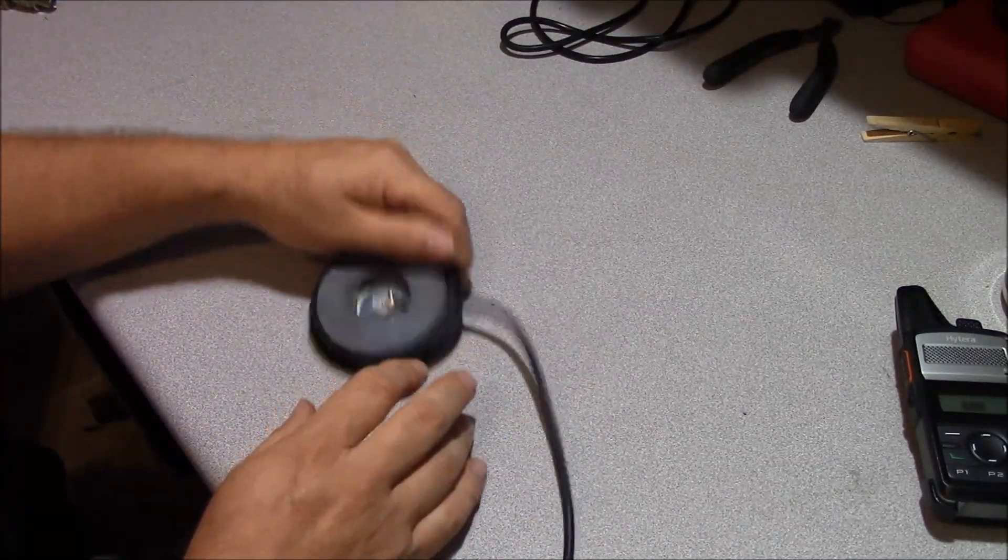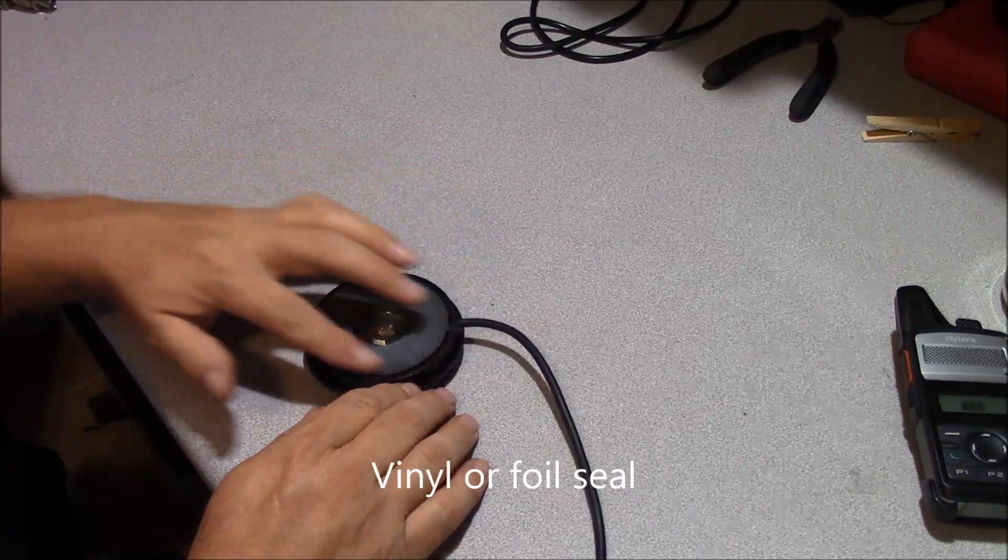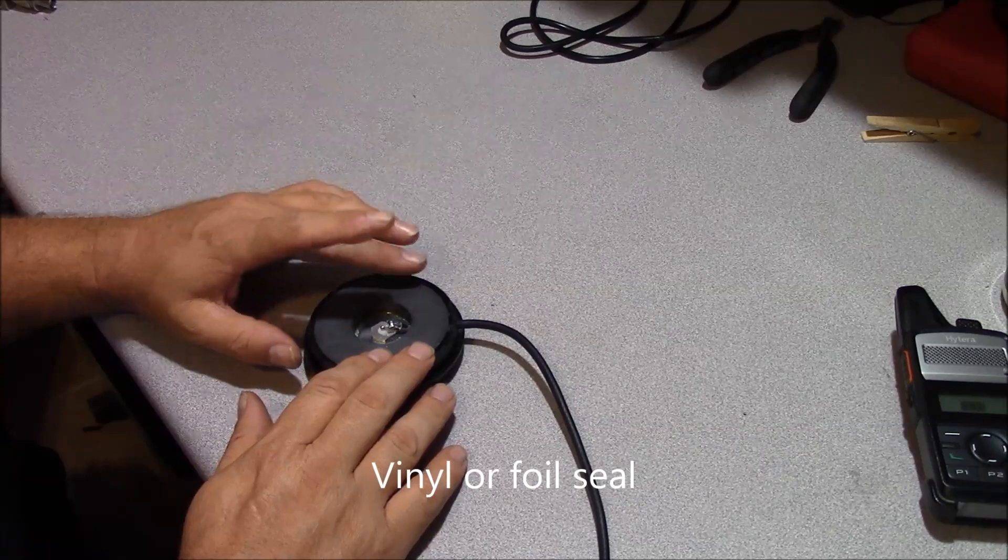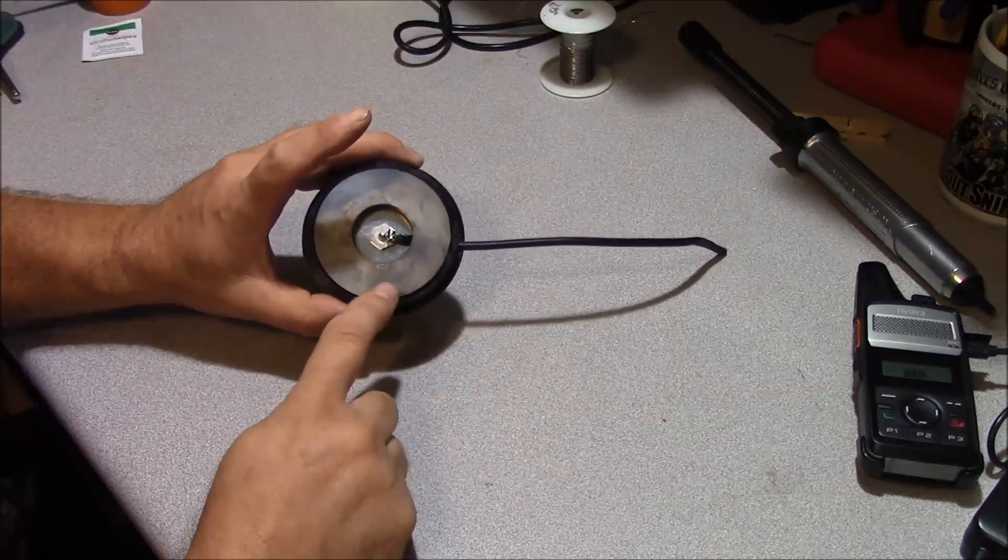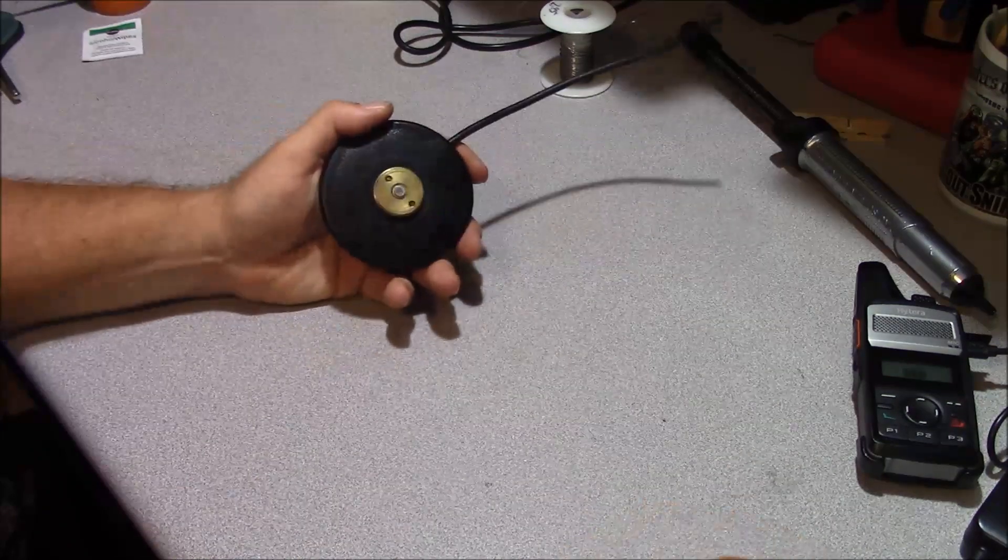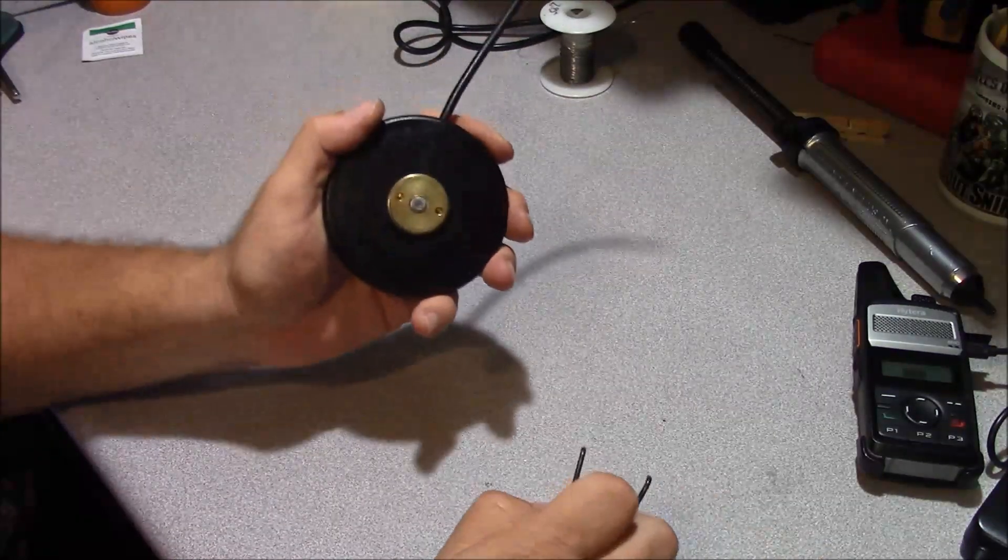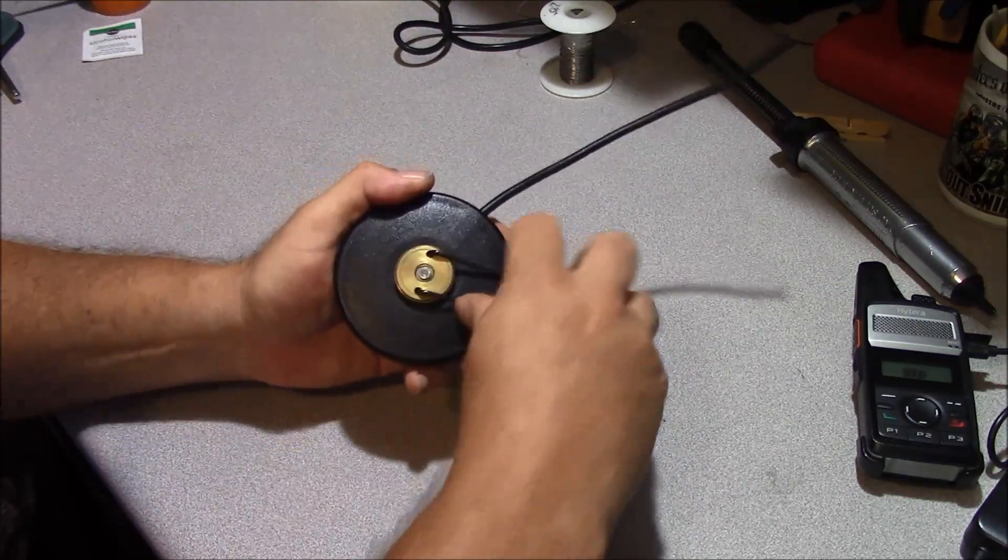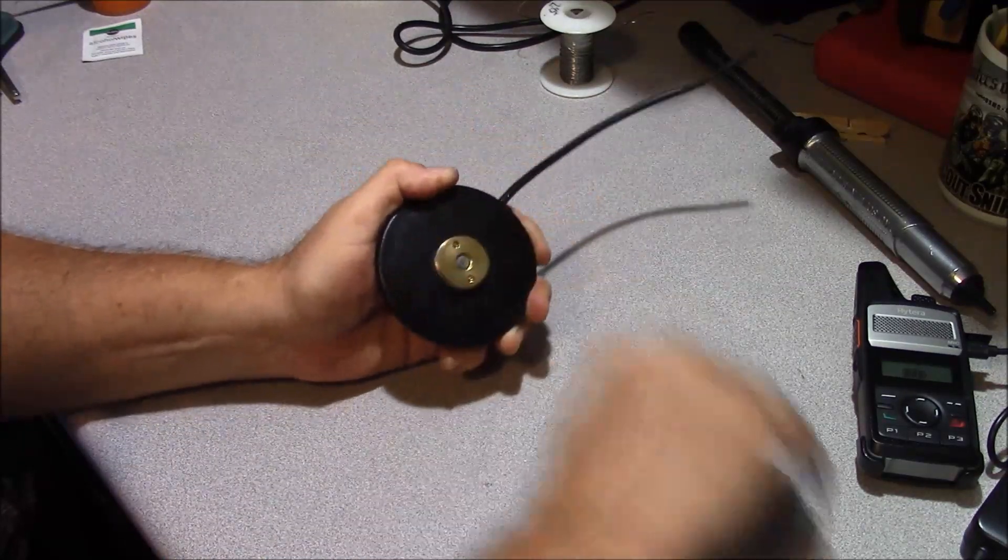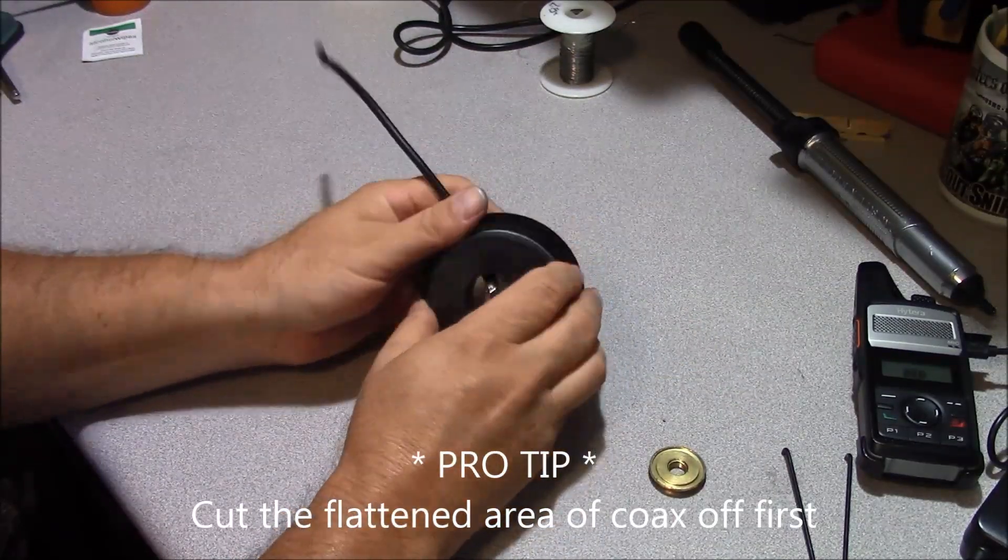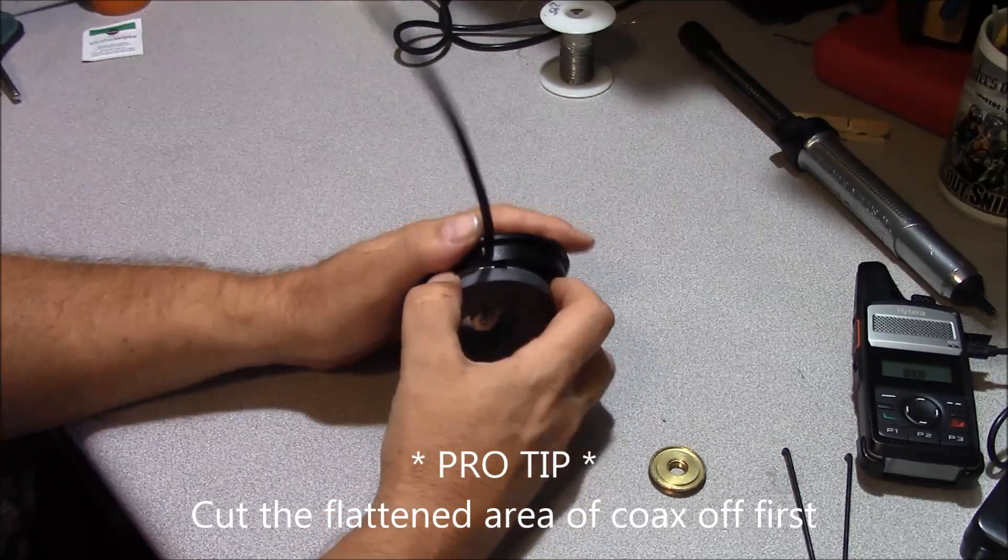Now when you flip these over, I've already taken the vinyl off. Typically there's a vinyl or a foil layer that's on the base of these here, and that's important to keep weather out. Now we're going to go ahead and disassemble our mag mount. Not all of these are the same. This one here uses a pin spanner on the NMO mount. So that's pretty easy to spin that off there.